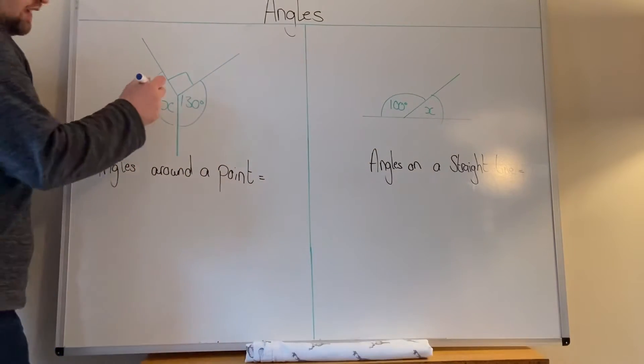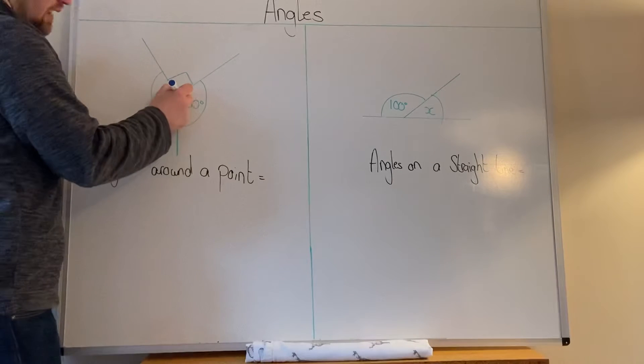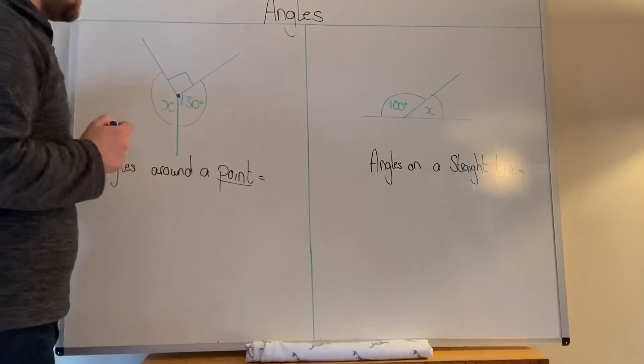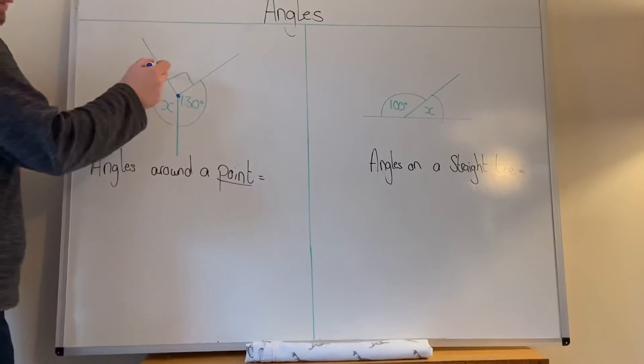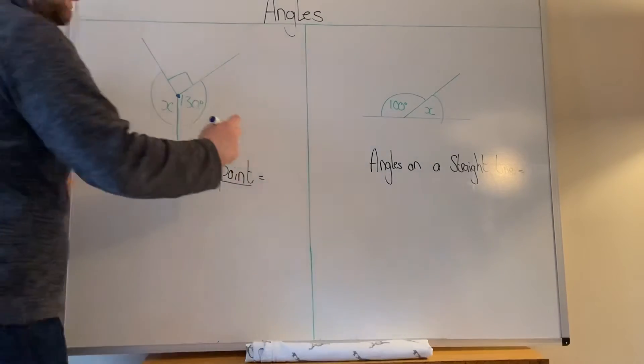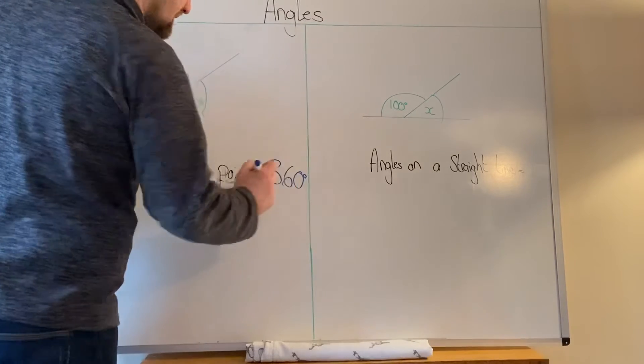Now if you look at this diagram, all the lines here join up in the middle. That there is your point. And your angles are obviously around the point. Now angles around a point add up to 360 degrees.